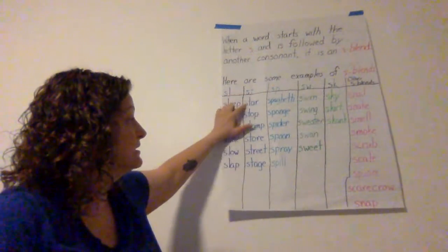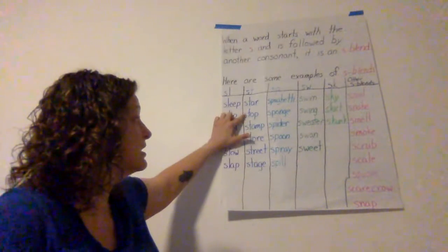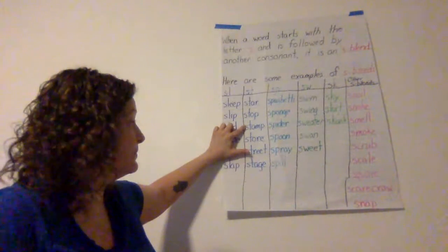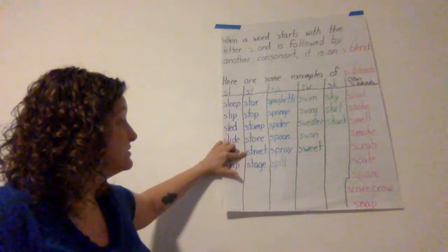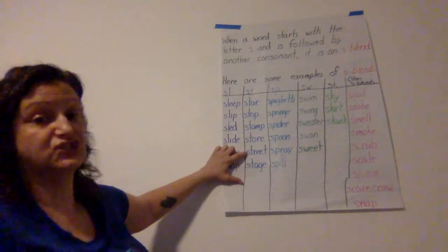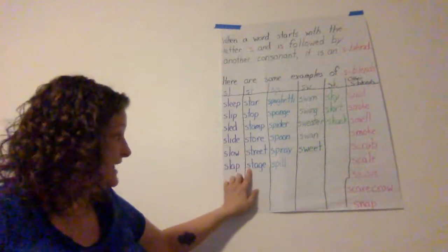ST we have star, stop, stamp, store, street—that's actually an STR blend—and stage.